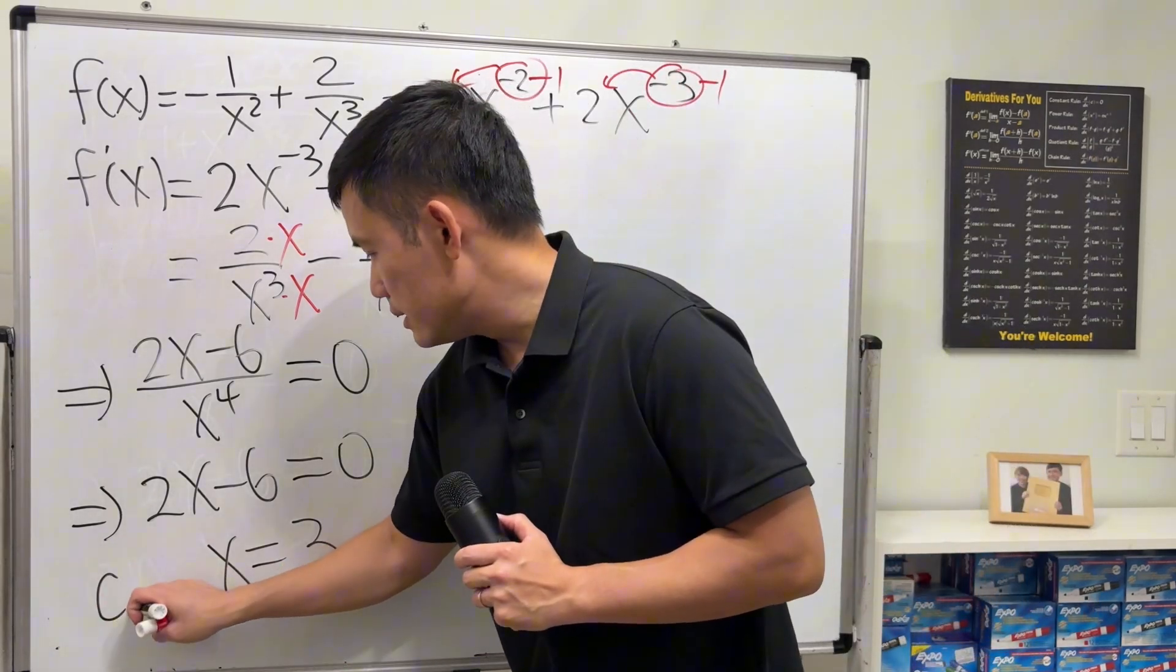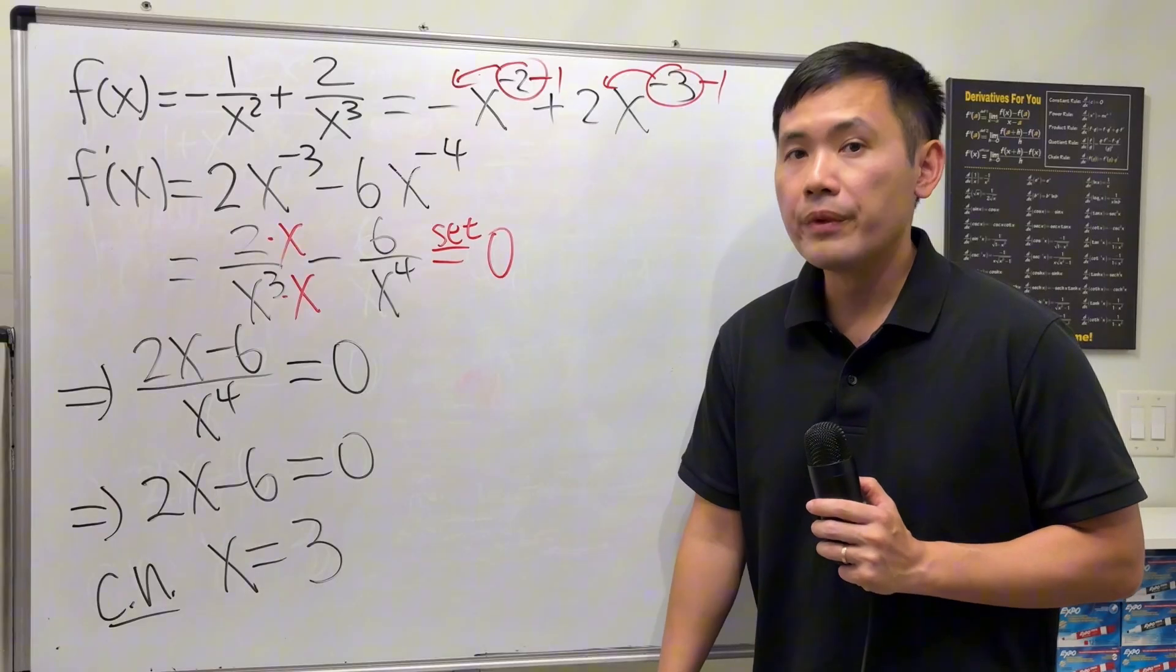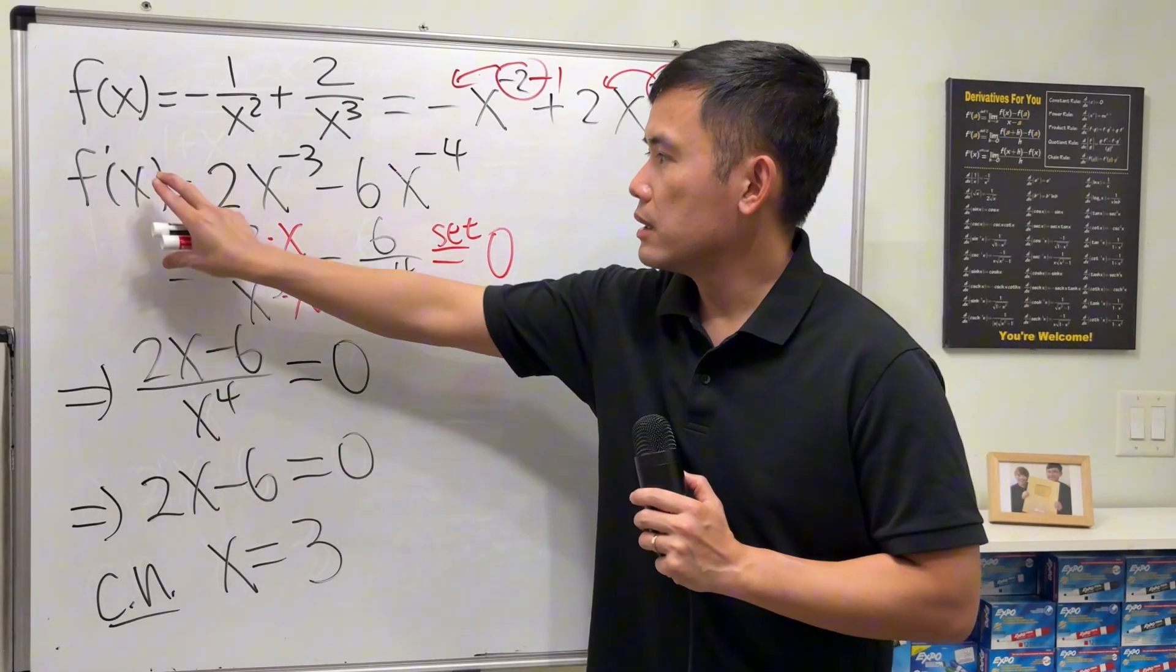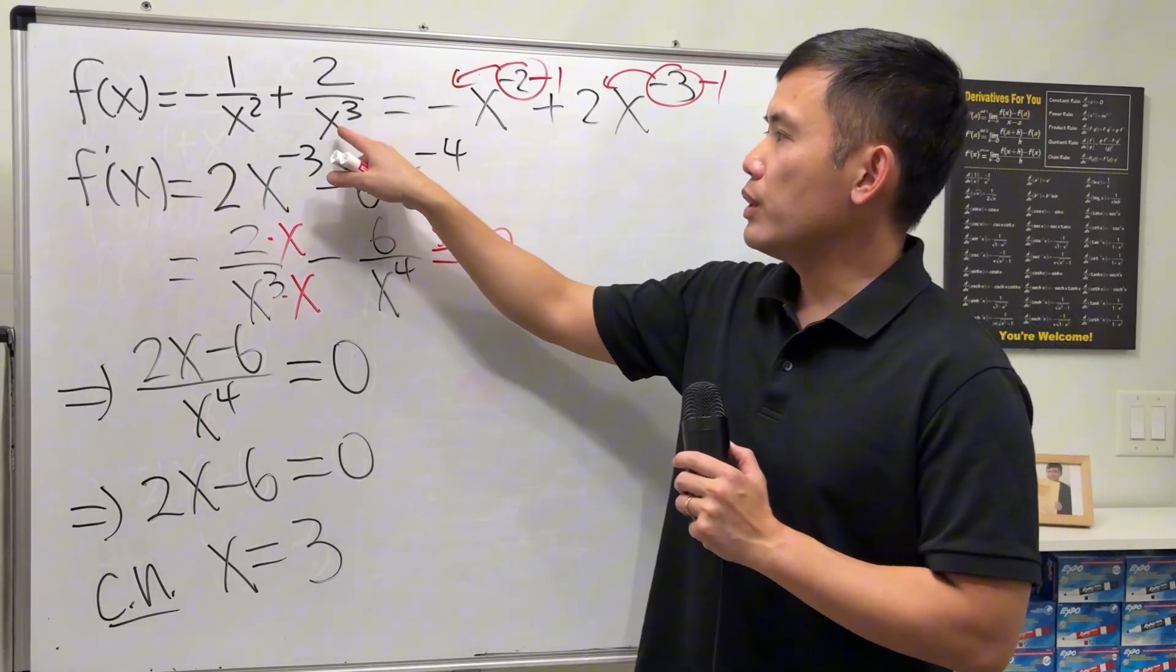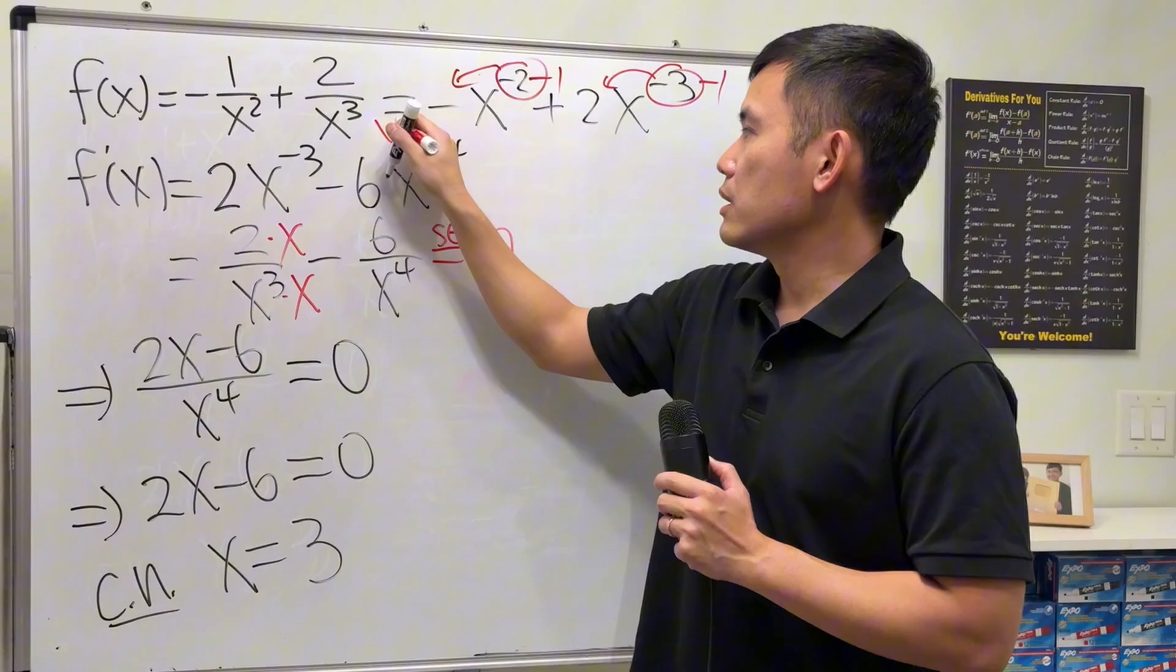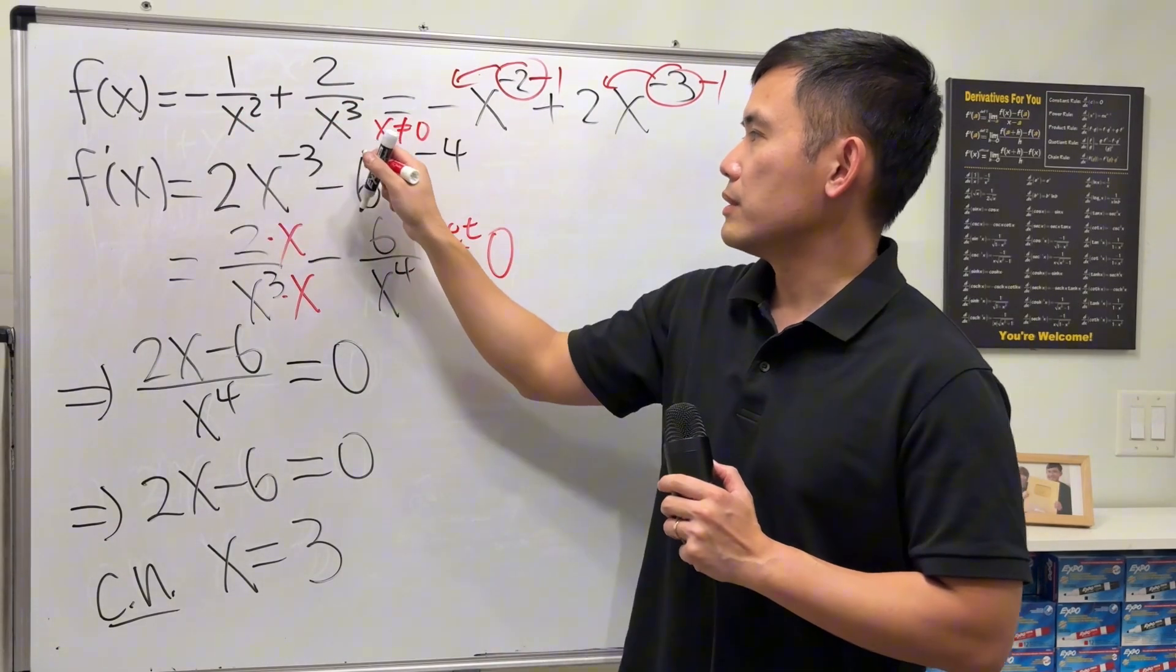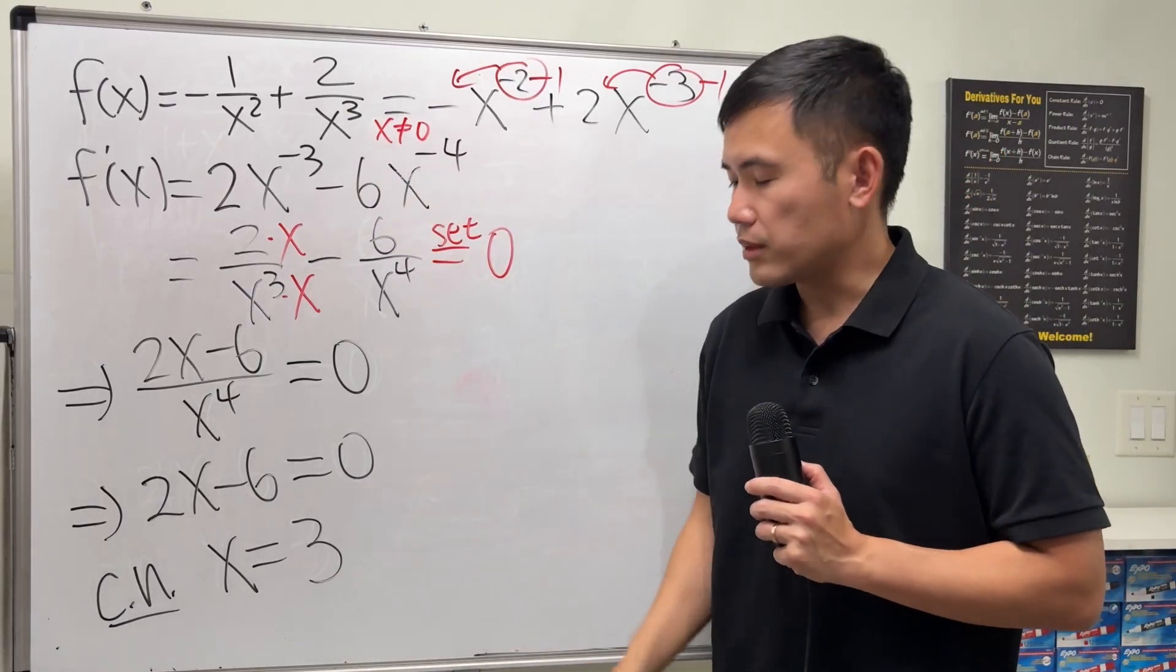And in fact, this is the only critical number that we will have to consider. We are not going to consider 0, even though 0 will make the first derivative undefined. But, 0 is not in the domain of the original function. Because it has the x squared x on the 3rd power on the bottom, so you don't have to consider that. That's the only one.